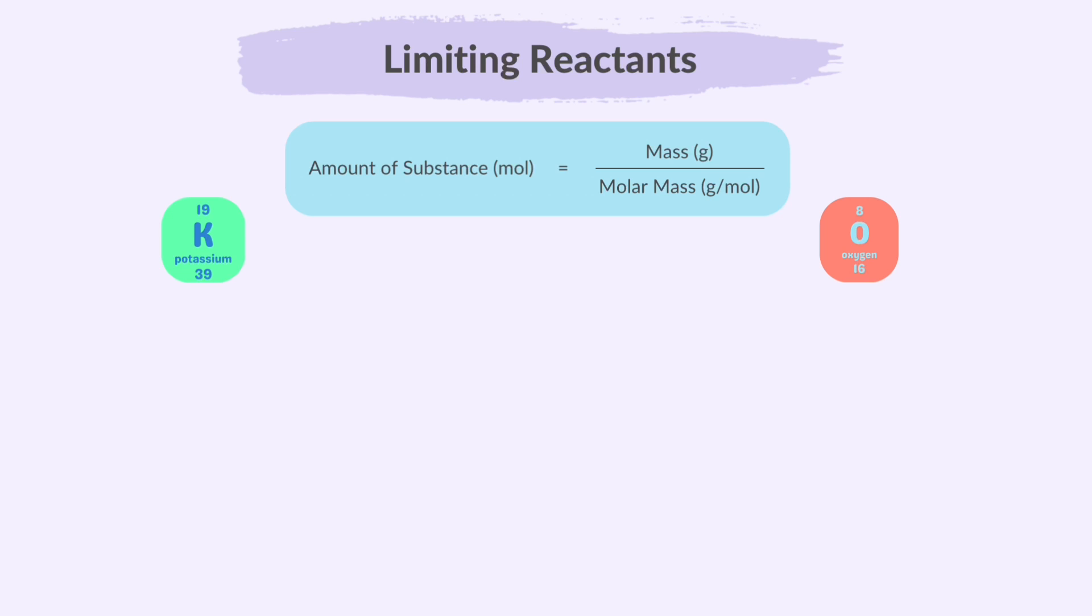So let's find the actual number of moles of potassium and oxygen. Using the mole formula, we substitute the masses of potassium and oxygen, 12 grams and 16 grams, as given in the question, to find the number of moles. The answers are 0.31 moles of potassium and 0.5 moles of oxygen. Now, according to the ratio, 4 moles of potassium react with 1 mole of oxygen. So, 0.31 moles of potassium in reality should need only 0.08 moles of oxygen to react with. But, there are 0.5 moles of oxygen.